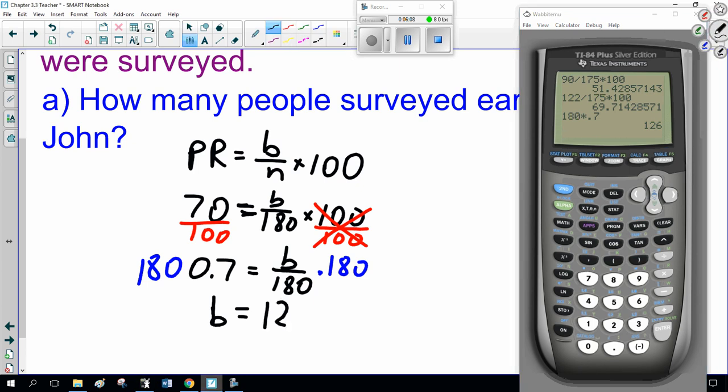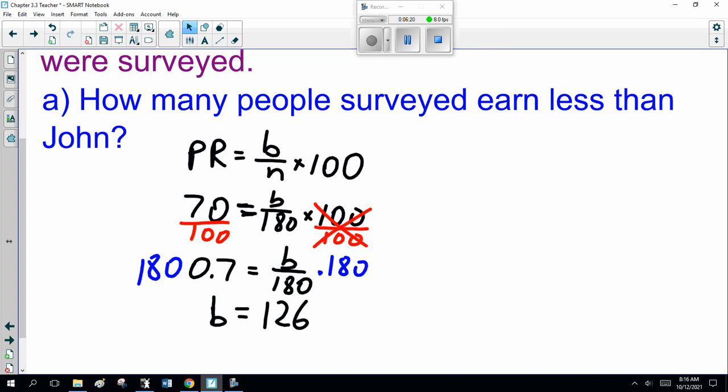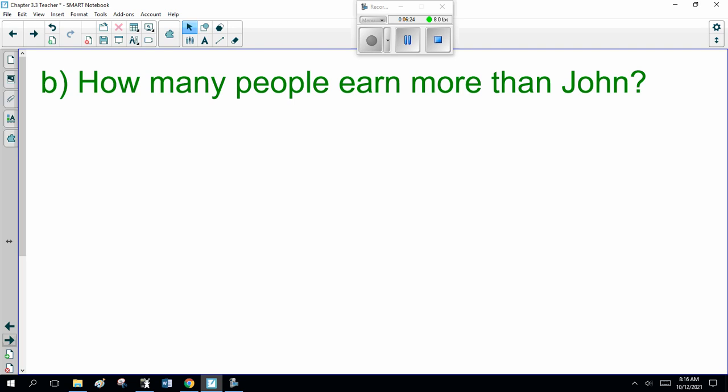We have 126 people below him in the survey, or earned less. So, how many people earned less than 126? So, he's doing good. Now, the question is, how many people earned more than John?